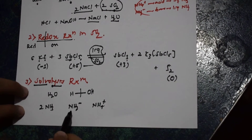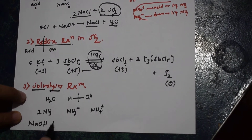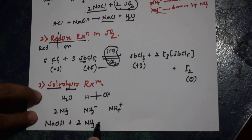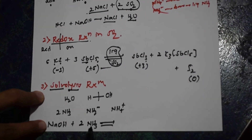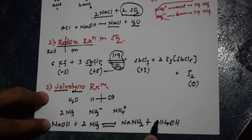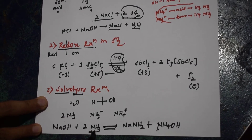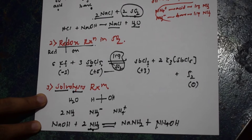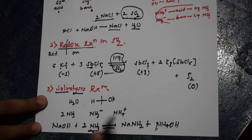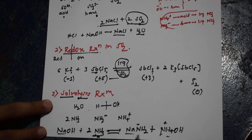For example, if I consider NaOH and 2 moles of liquid ammonia, what I get is NaNH₂ plus NH₄OH. Here, ammonia breaks apart — NH₂⁻ adds to one component and NH₄⁺ adds to the other. This is aminolysis. When water is the solvent that breaks down, it is known as hydrolysis. Now, let us see how the same type of reaction occurs in liquid sulfur dioxide.